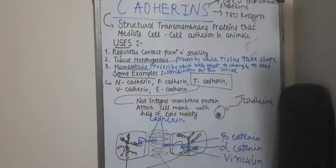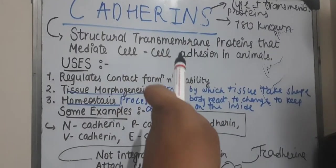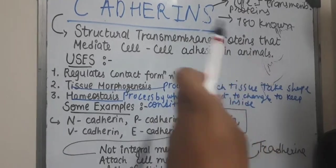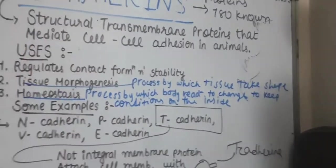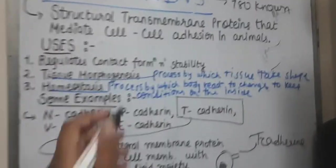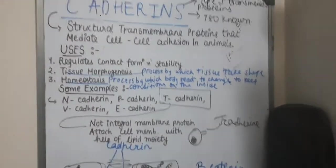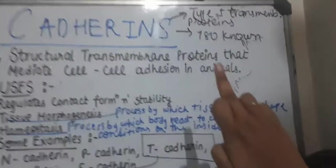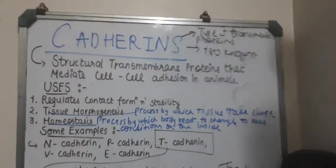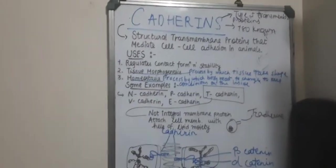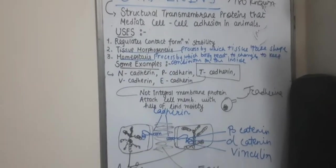Structural transmembrane proteins that mediate cell-to-cell adhesion in animals - means they bind one cell to another cell, cell-to-cell adhesion. And it is important to remember that they are only present in the animals and not in the plants.